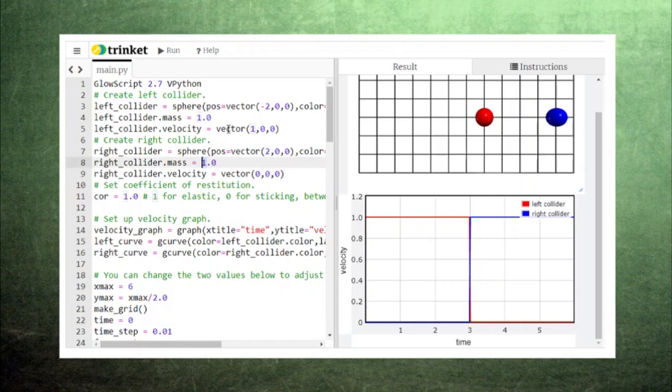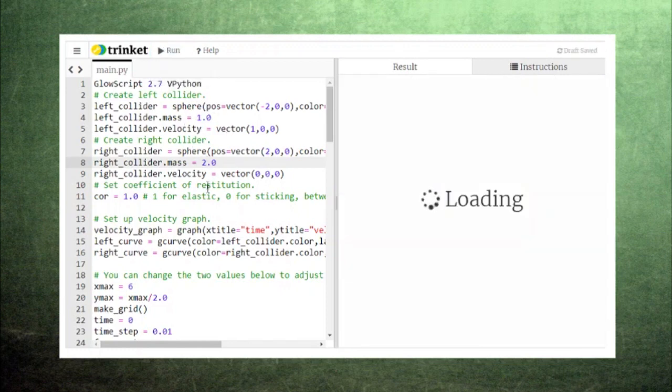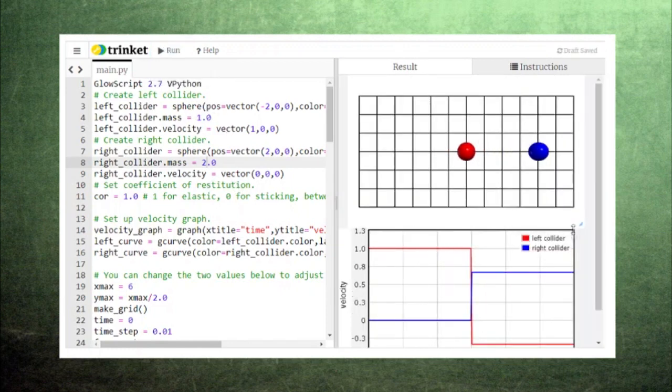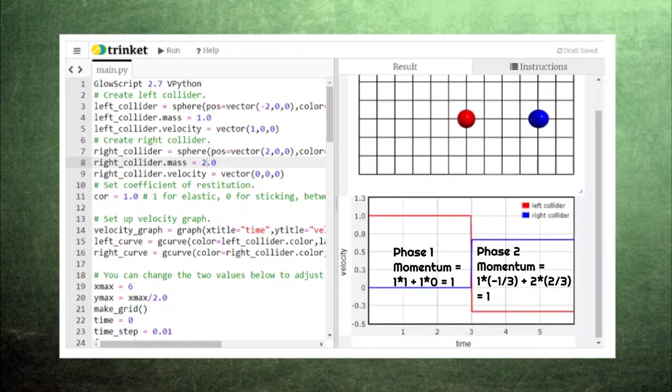Let's try leaving the velocities as they are, but make the right collider heavier. The left collider rebounds off of the right one. But the total momentum comes out to be the same.